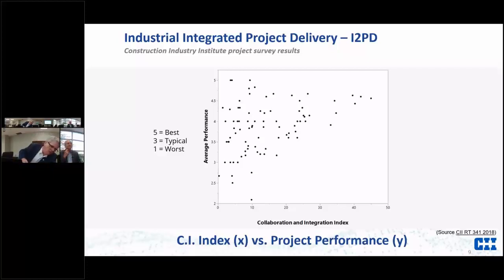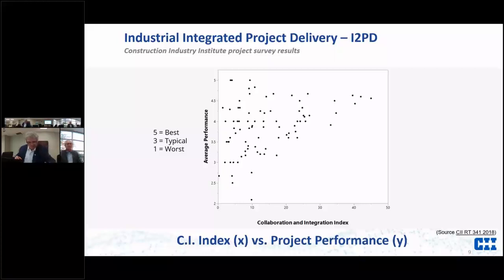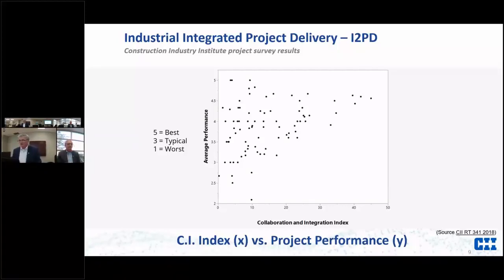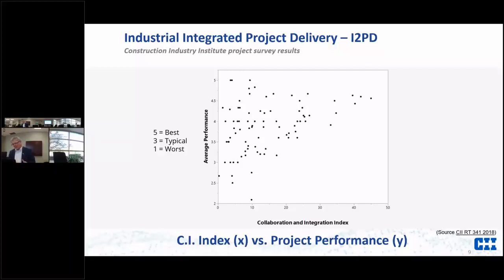We noticed that the bottom right-hand corner was empty — essentially, as the collaboration and integration index increased, the success rates of projects increased. We added simple statistical analysis and saw that the mean performance was 3.8 in terms of project performance for the dataset of 85 projects, and the mean collaboration index across all projects was 14.